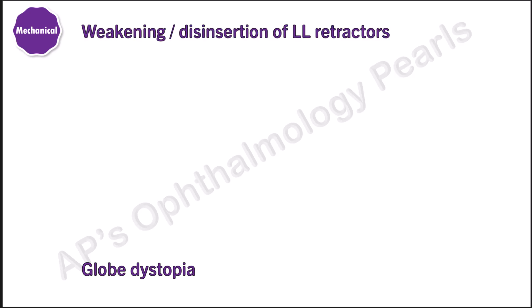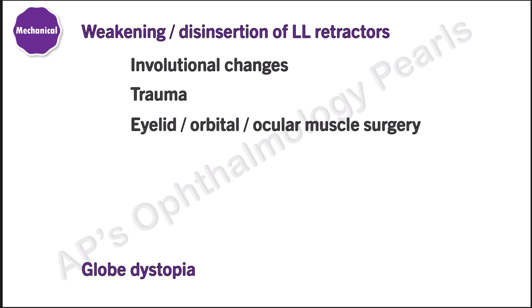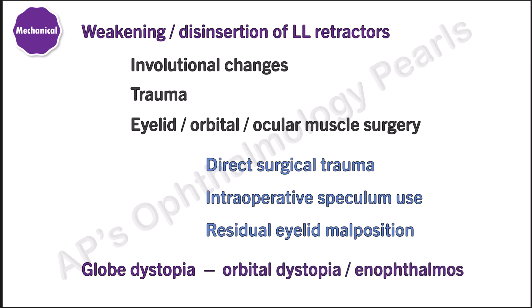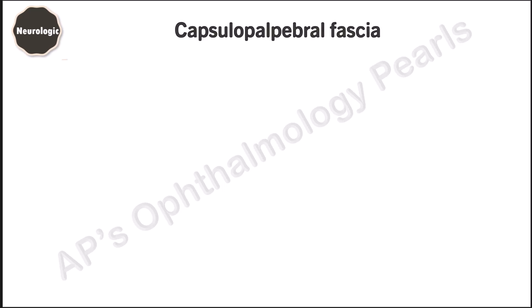Weakening or disinsertion of lower lid retractors can be due to involutional (aging) changes, trauma, or surgery. Surgery can cause reverse ptosis either due to direct injury to the lower lid retractors, intraoperative speculum use, or residual eyelid malposition. Globe dystopia may be a part of anatomical orbital dystopia or due to enophthalmos.